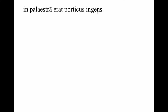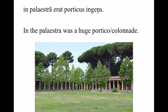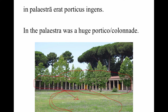In palaestra erat porticus ingens. In the palaestra was a huge portico, also called a colonnade. This wide open field area is the palaestra where people are exercising. Completely surrounding this large courtyard is a structure with all these columns and a roof over it — we could call it a portico or a colonnade. There's shade there, and people standing in it can watch boxing matches, wrestling, and people throwing a discus. We're going to learn in an upcoming chapter that this portico is also where Quintus goes to school.